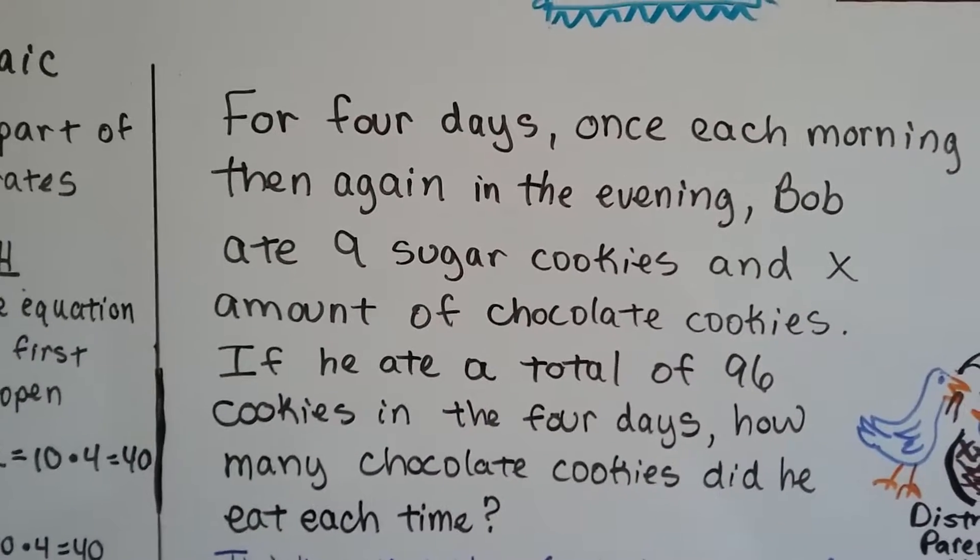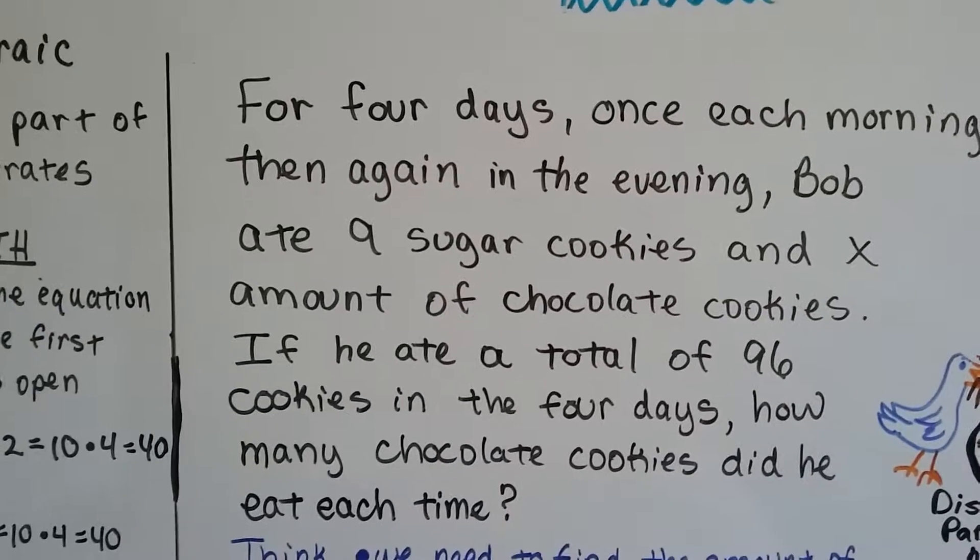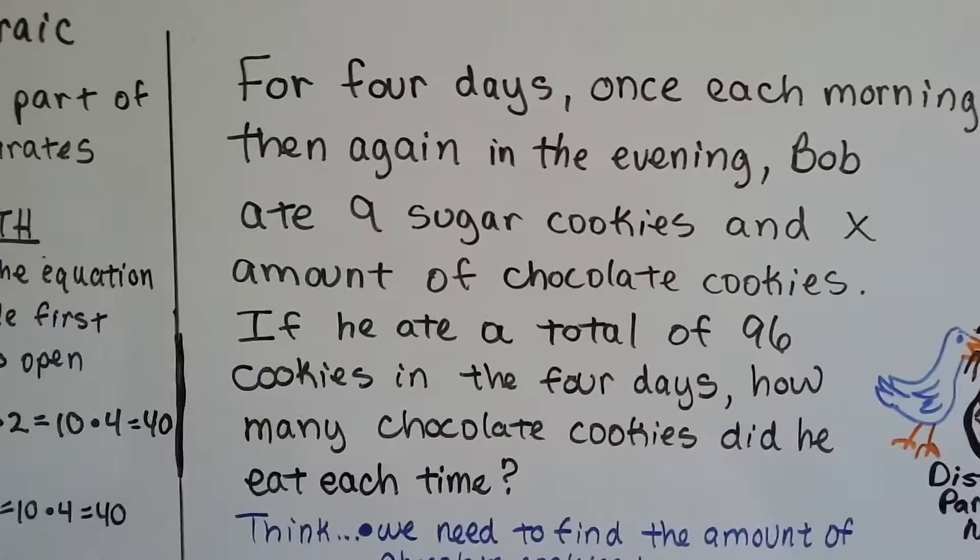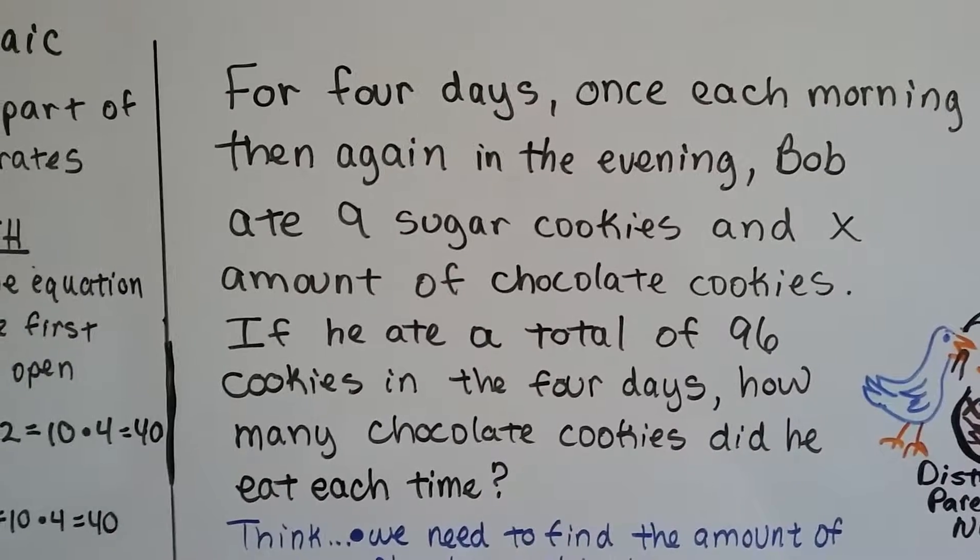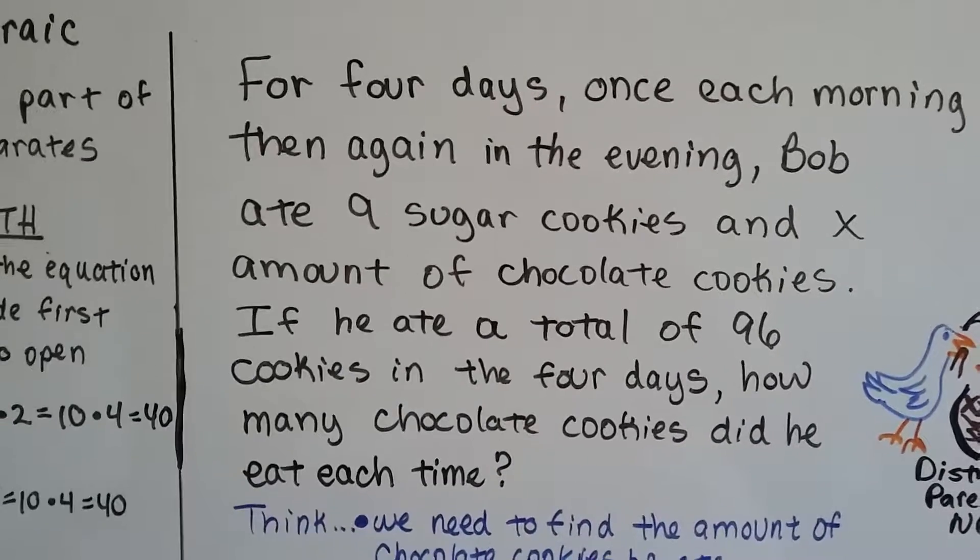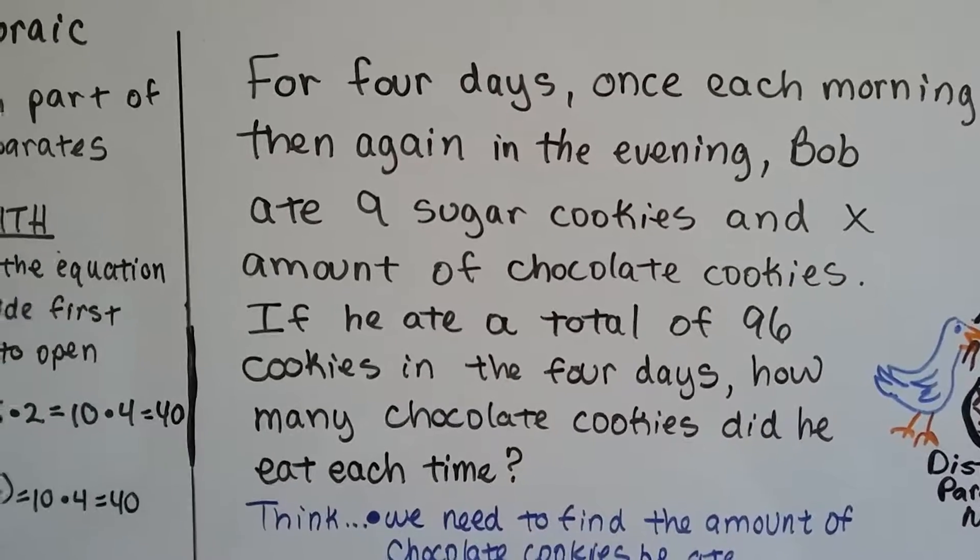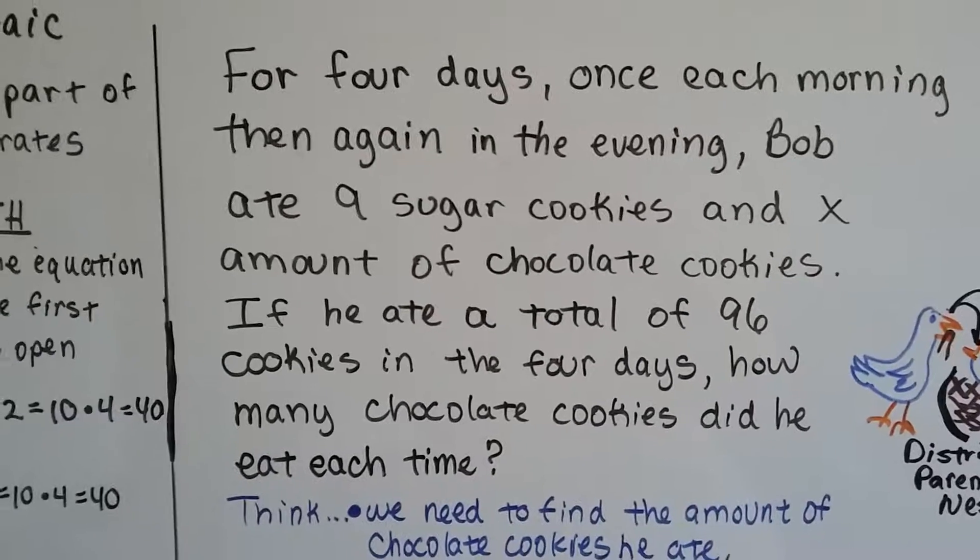For 4 days, once each morning, then again in the evening, Bob ate 9 sugar cookies and X amount of chocolate cookies. If he ate a total of 96 cookies in 4 days, how many chocolate cookies did he eat each time? It sounded long, but we can break it into little baby parts and it'll be no problem.